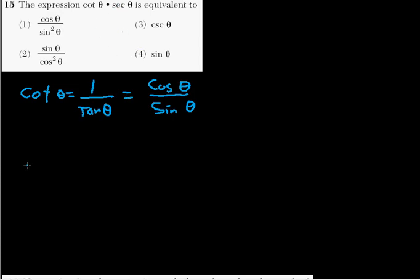Okay, secant theta. Okay, secant theta. Okay, secant is 1 over cosine. That's just the definition of it. It's just 1 over cosine theta.